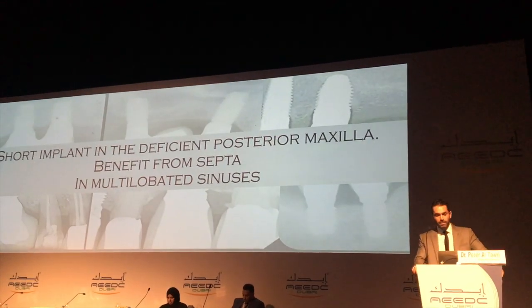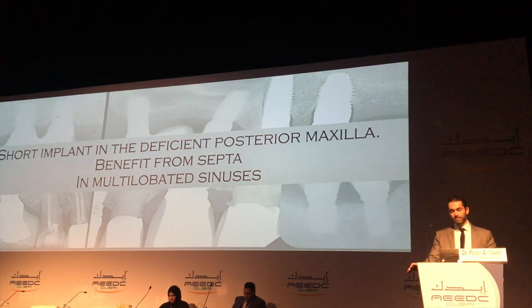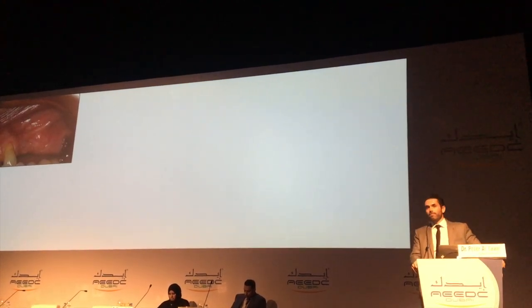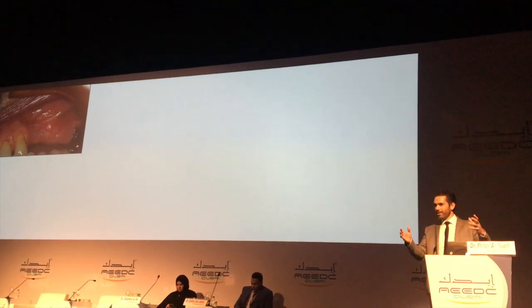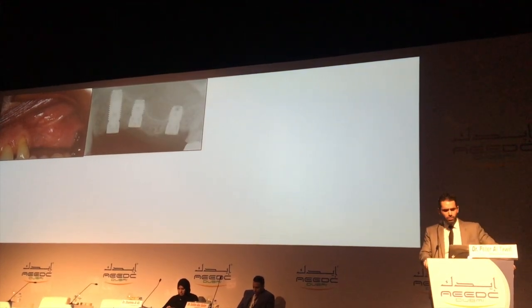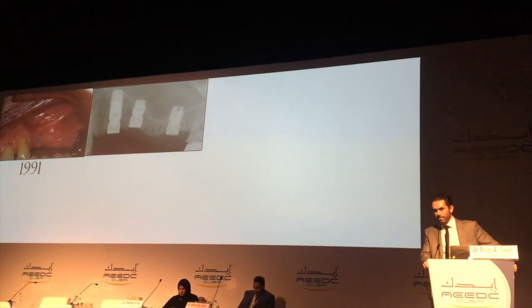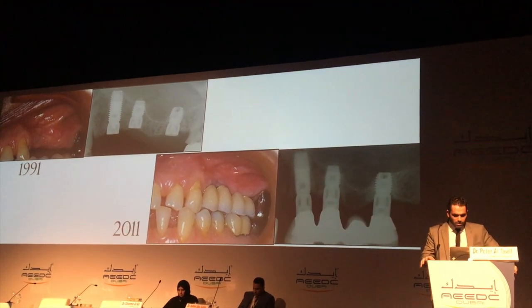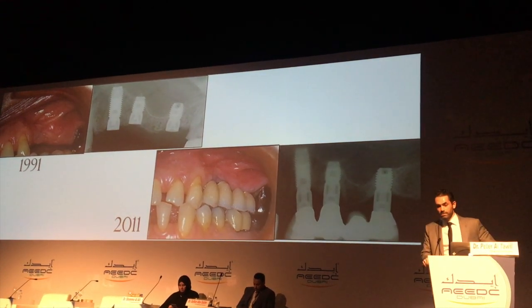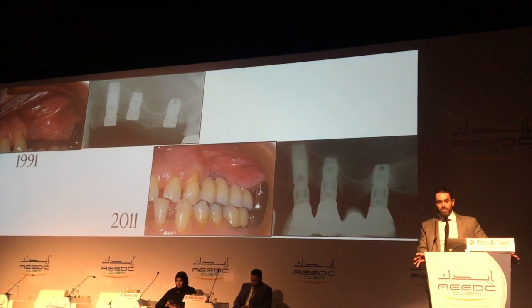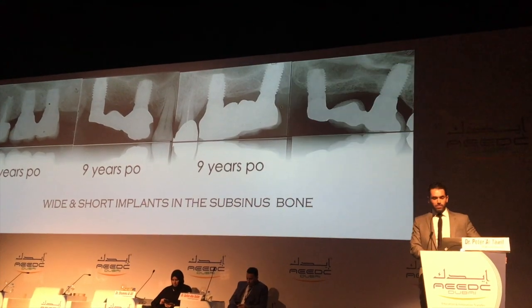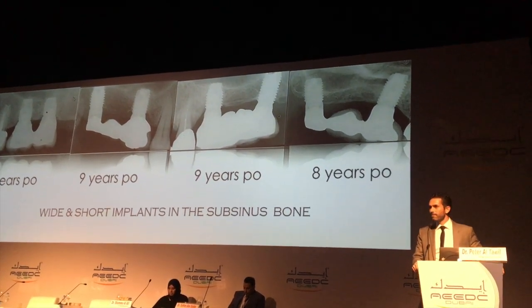Let's start with short implants in the deficient posterior maxilla and the benefit from septa when you have pneumatized sinuses. We work in an environment that has been placing implants for the past 35 years, so we have a lot of cases with long-term follow-up. These are early cases placed with short implants back in 1991 — all screwvent implants. This is 20 years later in 2011. These implants have stood the test of time for more than 20 years. These are short 7mm implants, splinted, and yet you see no bone loss around them.